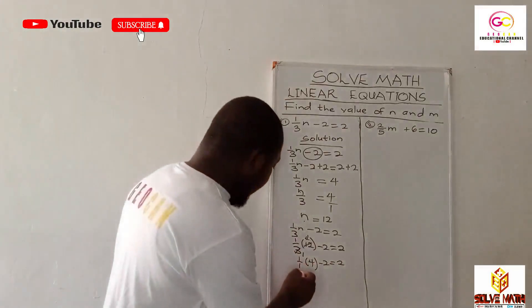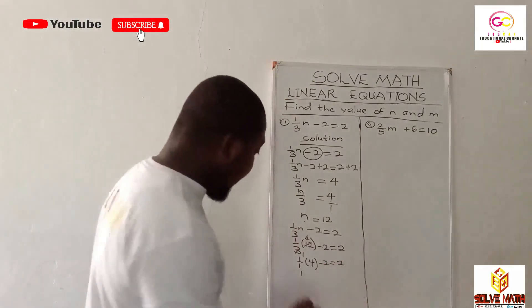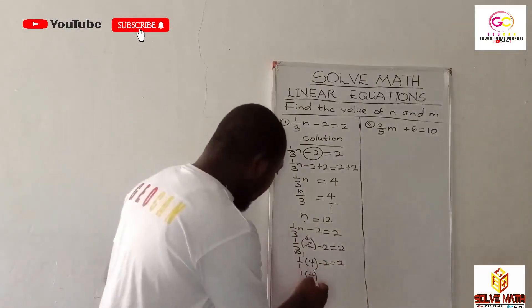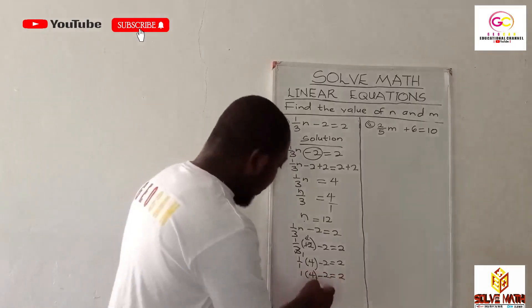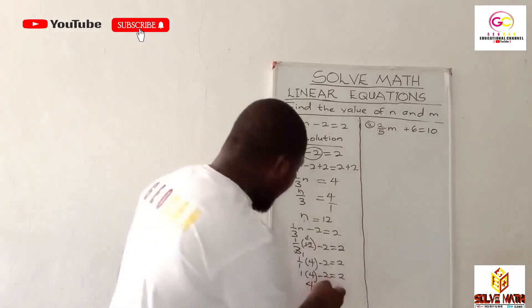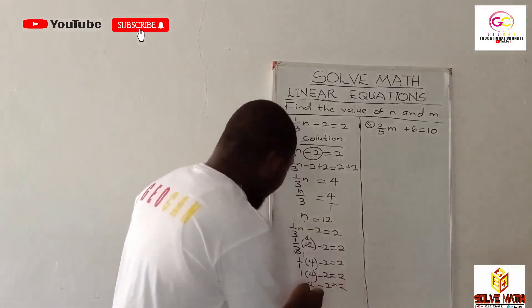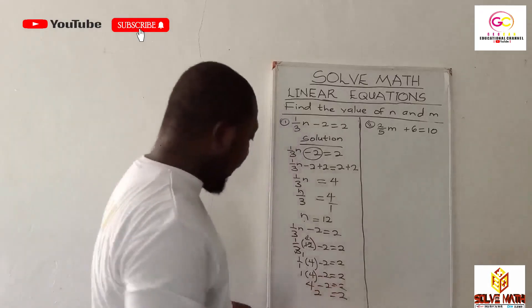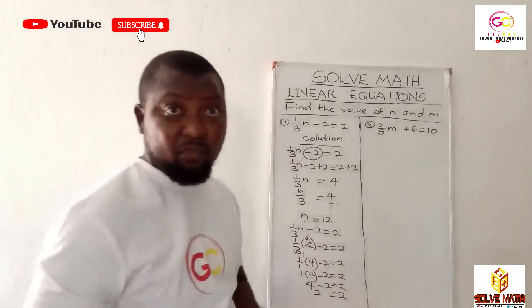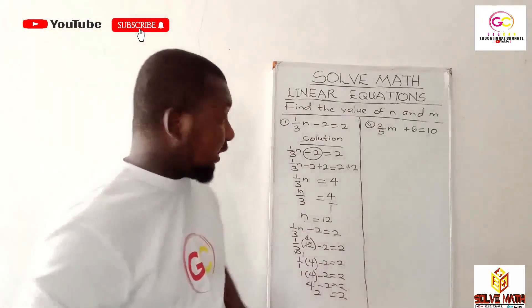Now 1/1 is the same as one. Any number over one is the same as that number. You have your bracket: 4 - 2 = 2. One times four is four minus two equals two. Now four minus two is two, which equals two. Voila! The right-hand side equals the left-hand side. This means that n really equals 12, it is correct.